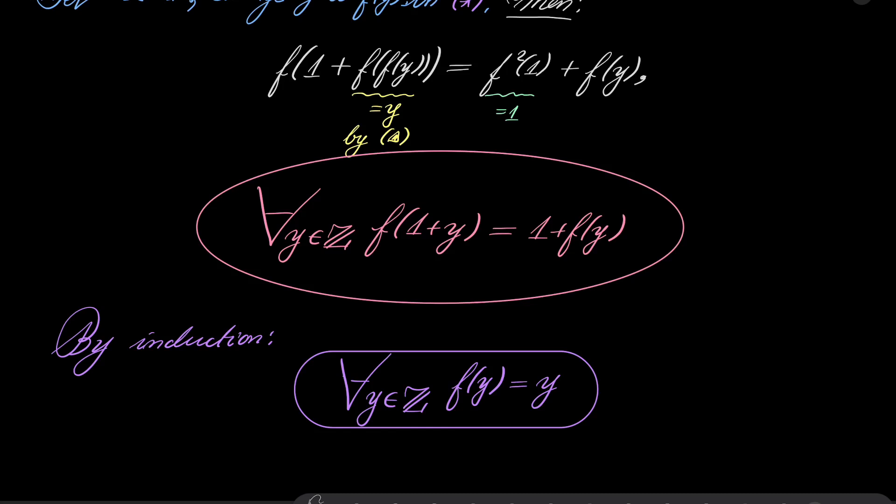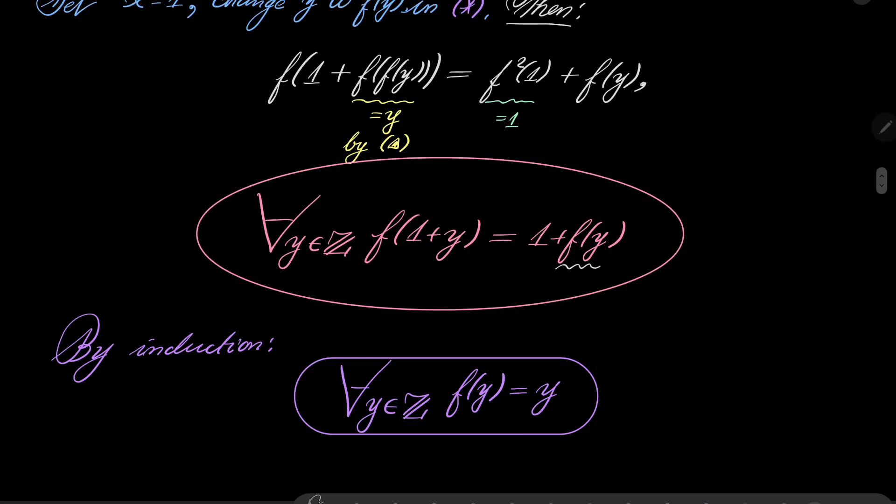And in the other direction, f of minus 1, for example, f of minus 1 equals f of minus 1 plus 1 equals f of 0 which is 0, so f of minus 1 equals minus 1 and you probably see what's happening.